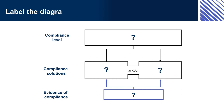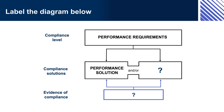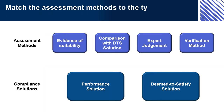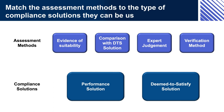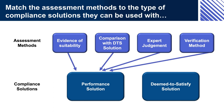Label the diagram: the correct labels are Compliance level, Performance requirements, Compliance solutions, Performance solutions, and/or Deemed-to-Satisfy solution, Evidence of compliance, and Assessment methods. All assessment methods can be used with a performance solution. Evidence of suitability and expert judgment can be used with a DTS solution.